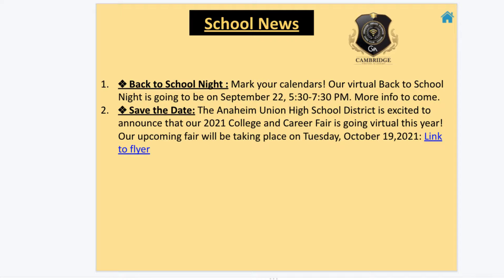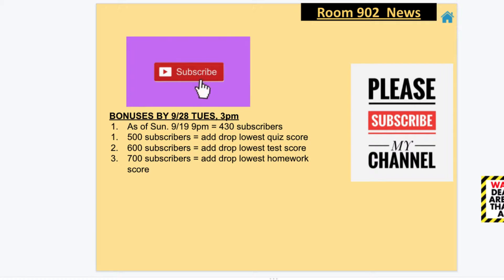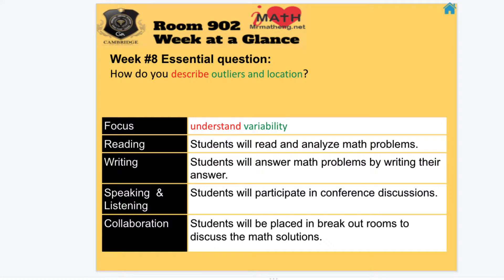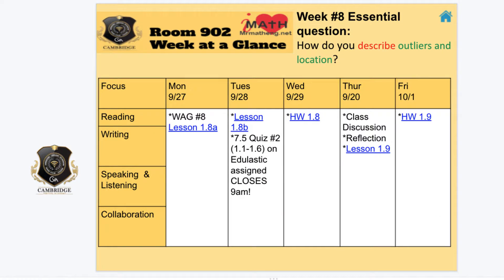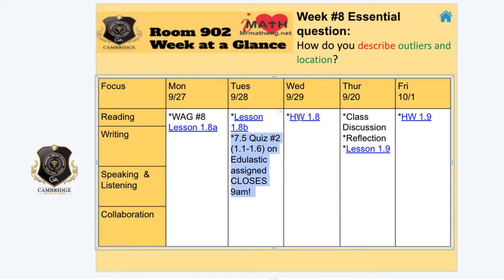School news — I think we're past those except for the college fair. We're inching up, so we need a lot more. Week number eight, we're describing outliers and location. I broke up lesson 1.8 into two lessons. Assessment 7.5 from week 7 — assessment is always 0.5 — it is closing on Tuesday, so make sure to get that done by 9 AM. Wednesday, you have homework 1.8. I'll see you guys on Thursday and we'll start lesson 1.9 and then finish homework 1.9.